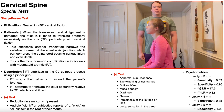These symptoms could be any number of things, but most are going to be cranial nerve signs. For example: an abnormal pupil response, eye twitching or nystagmus, or a soft end feel. Remember, we're looking at integrity of the transverse cervical ligament — that should be associated with a firm end feel when you translate C1 posteriorly relative to C2. If it's a soft end feel, that implies damage to the ligament. There can also be muscle spasm, dizziness, nausea, paresthesias of the lip, face, or limb, or a lump sensation in the throat.